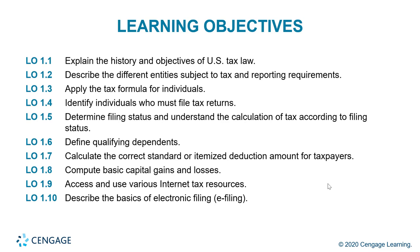The learning objectives for chapter 1 include explaining the history and objectives of U.S. tax law, describing the different entities subject to tax and reporting requirements, applying the tax formula for individuals, identifying individuals who must file tax returns, determining filing status and understanding the calculation of tax according to filing status, defining qualifying dependents, calculating the correct standard or itemized deduction amount for taxpayers, computing basic capital gains and losses, accessing and using various internet resources, and describing the basics of electronic filing.